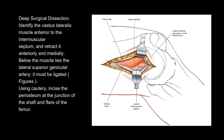Deep surgical dissection: identify the vastus lateralis muscle anterior to the intermuscular septum and retract it anteriorly and medially. Below the muscle lies the lateral superior genicular artery; it must be ligated.